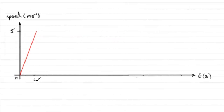Seconds after four seconds. So when she reaches this speed of five meters per second, she then goes at a constant speed for a further 60 seconds.